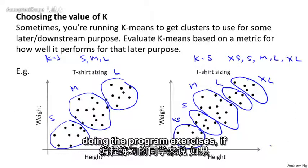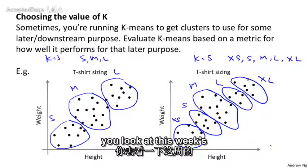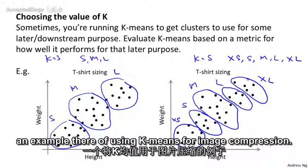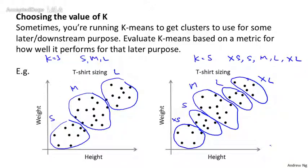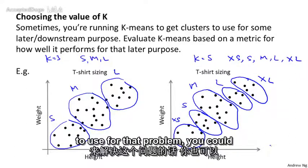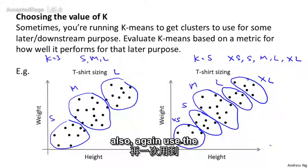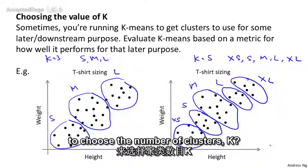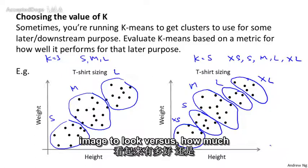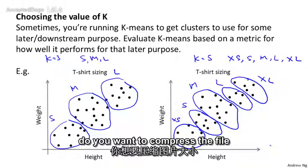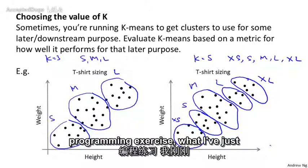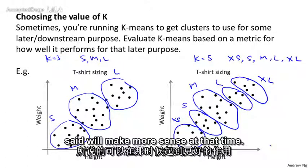For those doing the programming exercises, this week's exercise uses k-means for image compression. If you were trying to choose how many clusters to use for that problem, you can use the evaluation metric of image compression to choose k — specifically, how good do you want the image to look versus how much do you want to compress the file size of the image? Doing the programming exercise will make this clearer.